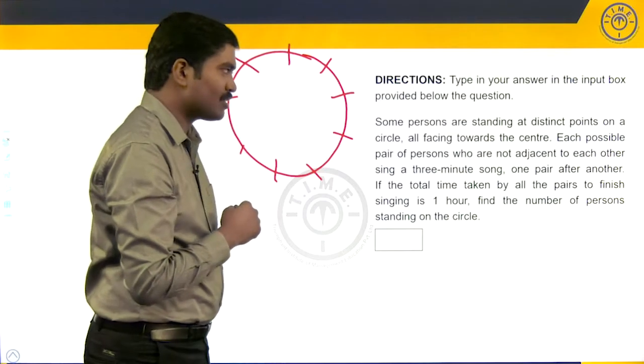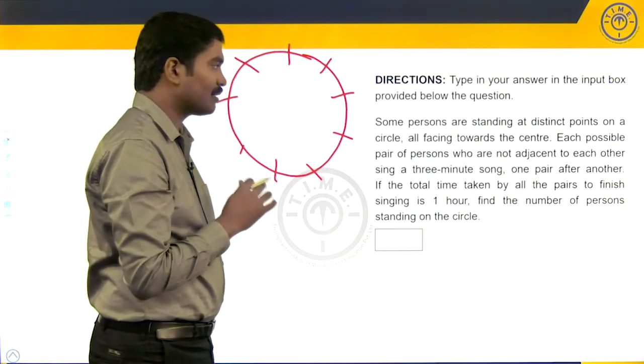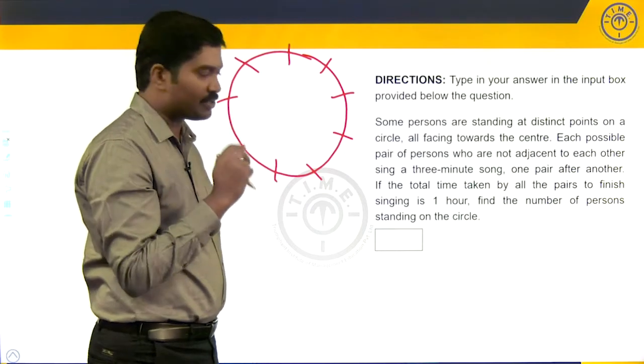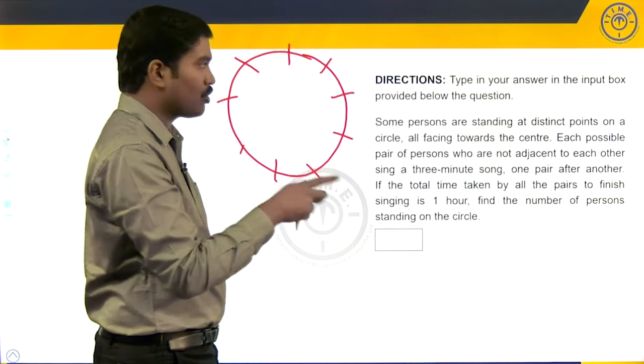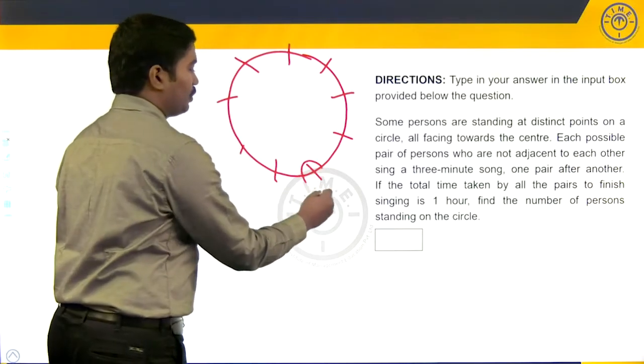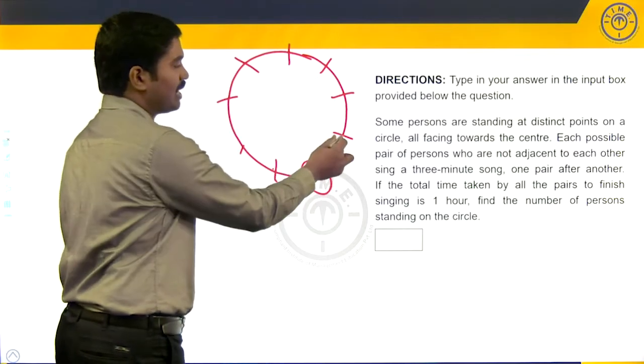Each possible pair of persons who are not adjacent to each other sing a three-minute song. Each possible pair, pair means two persons, right? Two persons who are not adjacent to each other, every such possible pair. For example, I want this person to sing. Can his adjacent person sing? No, he can't sing.